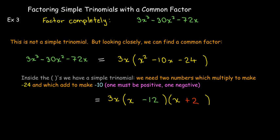So in the end, I have three factors: the 3x which is the common factor, and then two binomials — (x - 12) and (x + 2).